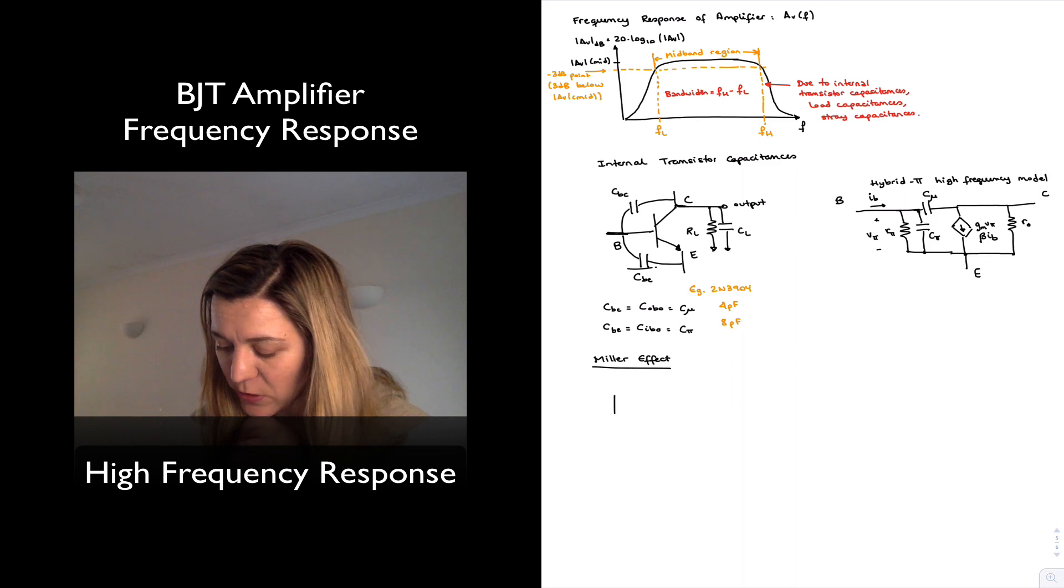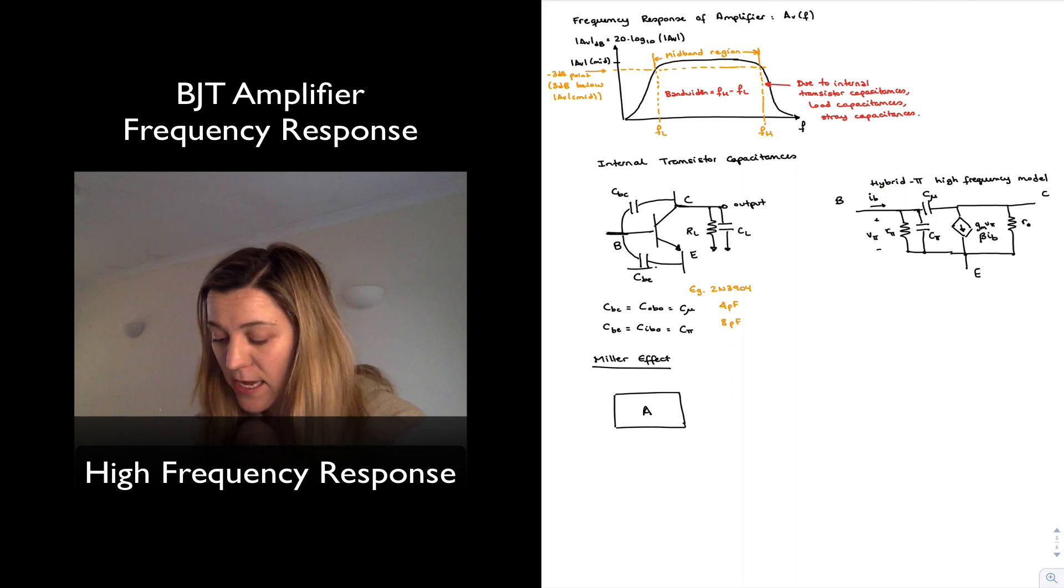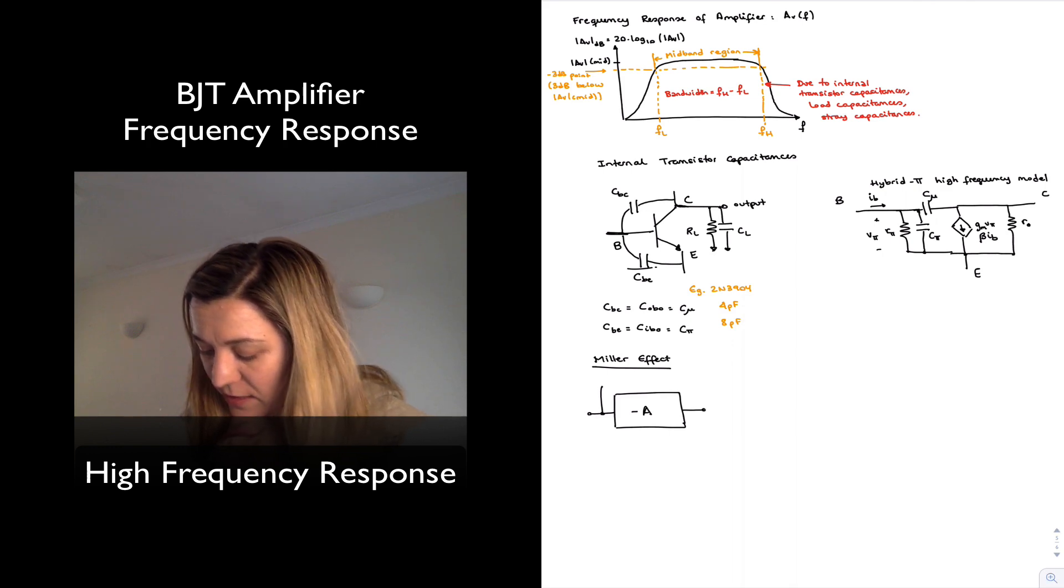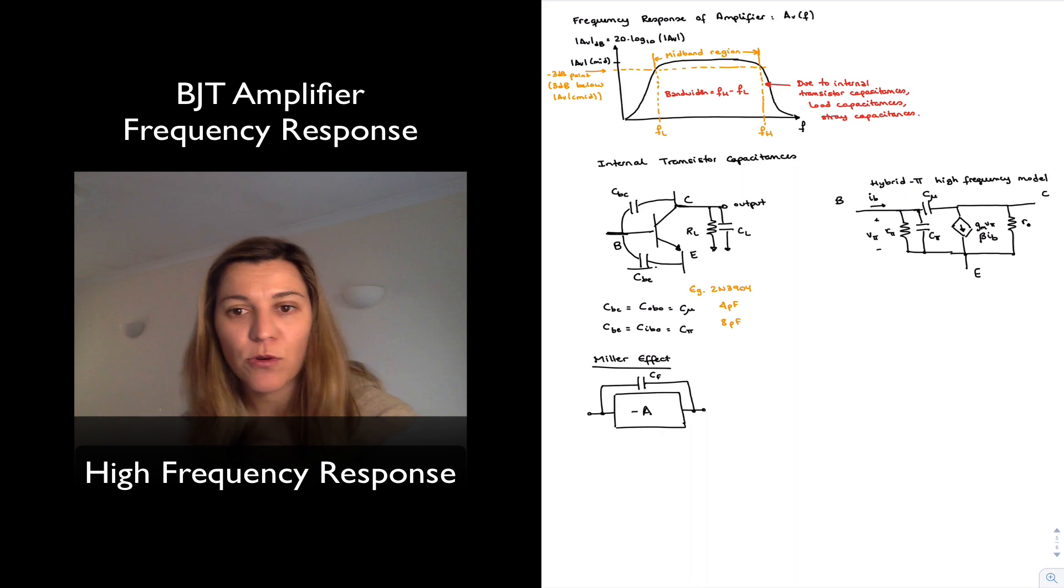Let's imagine that you have an amplifier, just generally speaking, with the gain A. I'm going to make this an inverting amplifier. And now let's imagine that I have a capacitive element connected between input and output, so I'm going to call this the feedback capacitor, or Cf. Let's be in, let's be out.